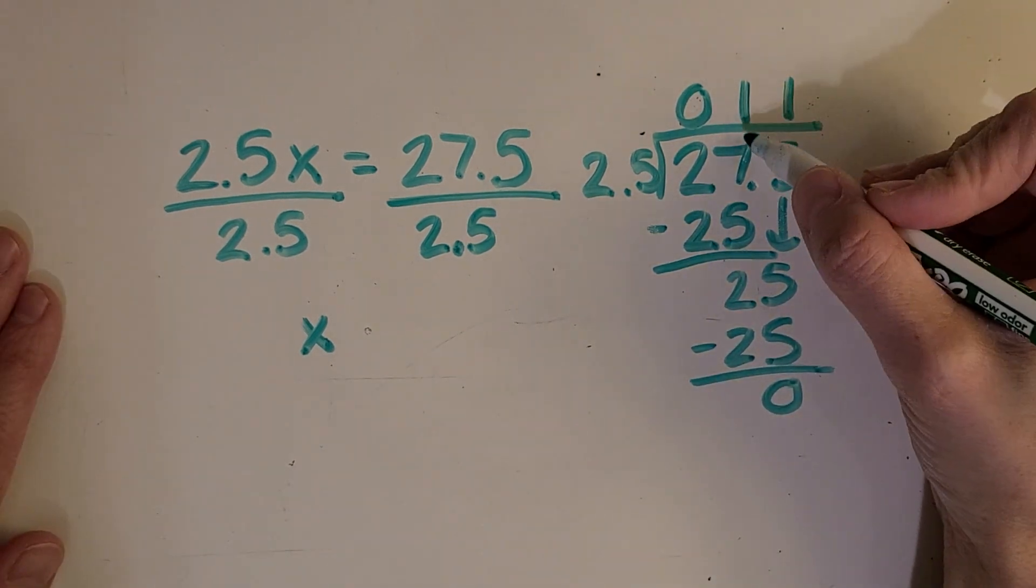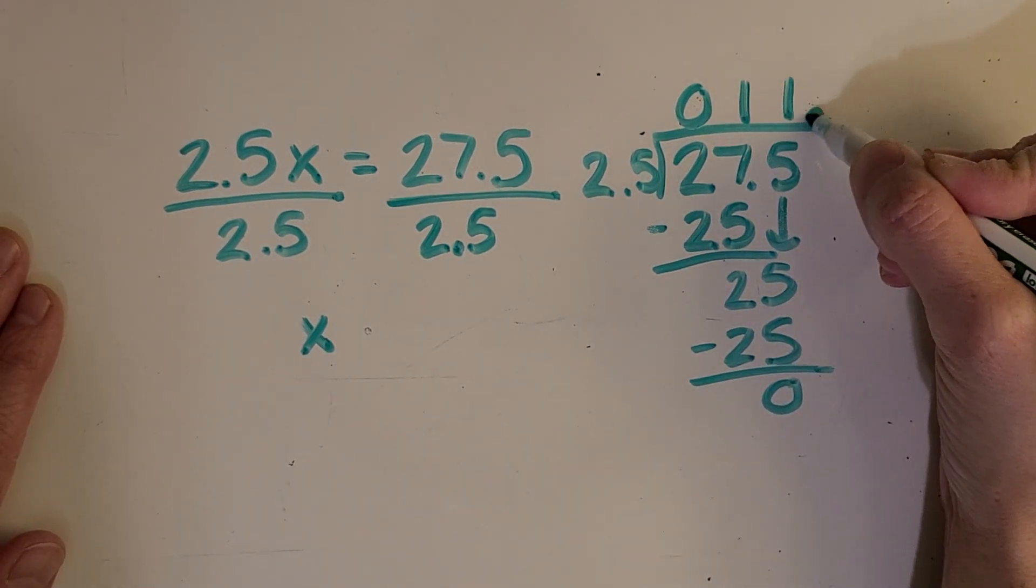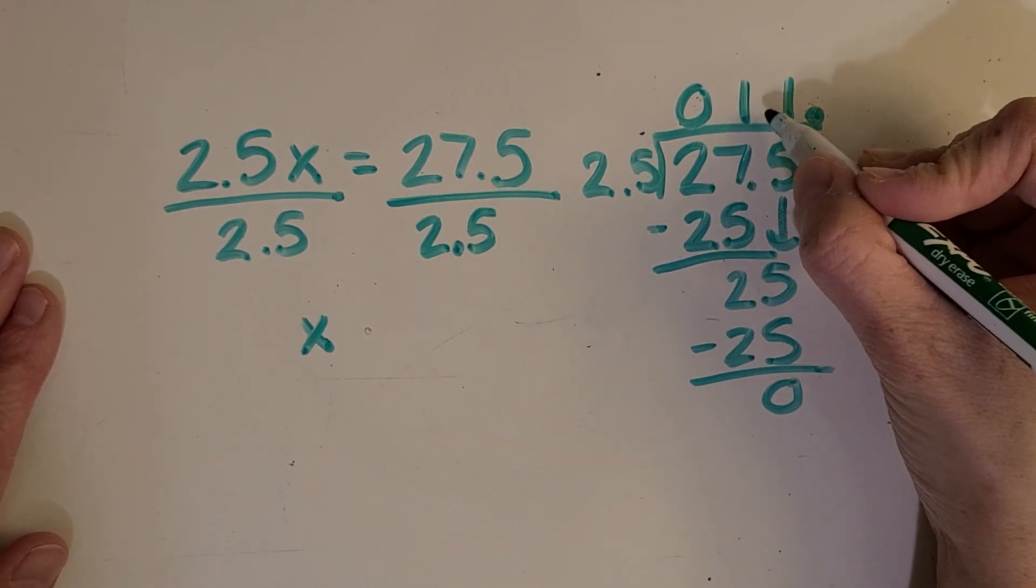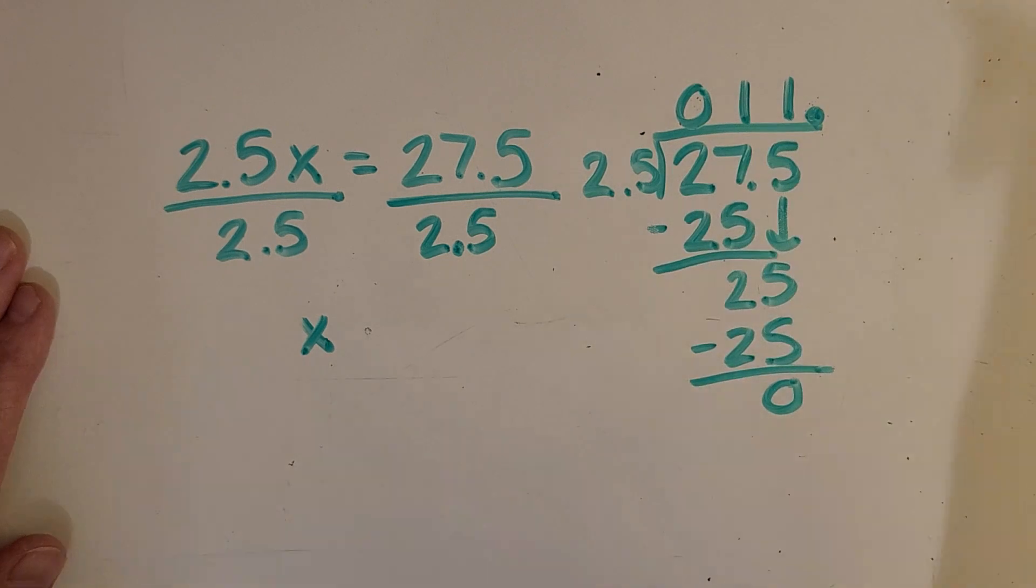And so, I'm going to want to make sure my decimal place goes over one more place. So, not just straight up, but another place over.